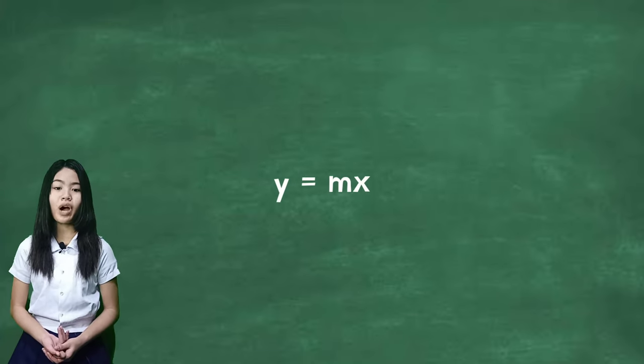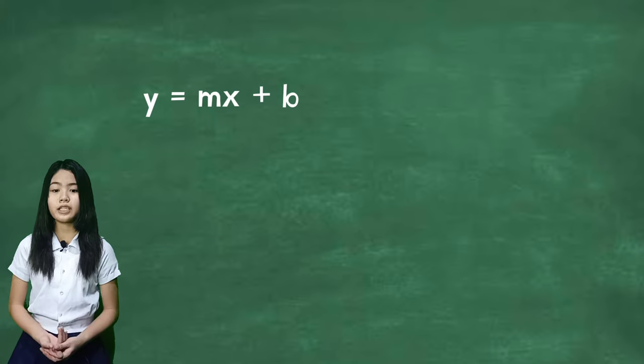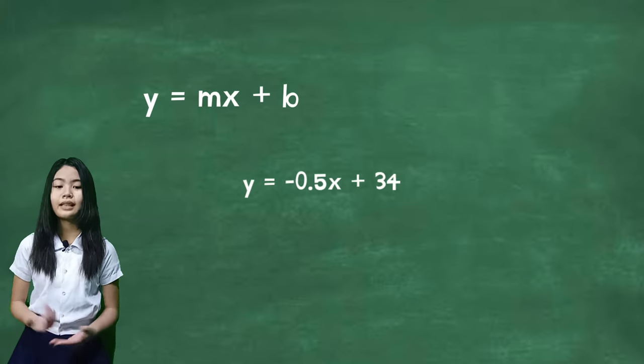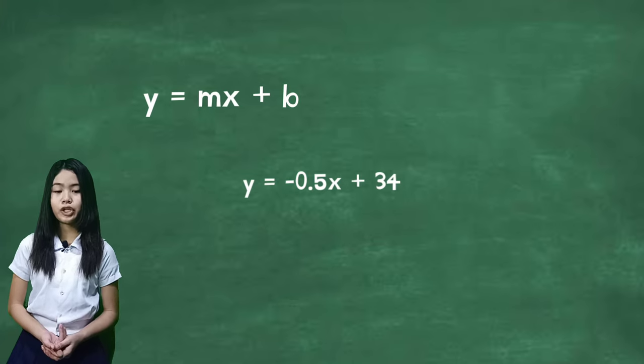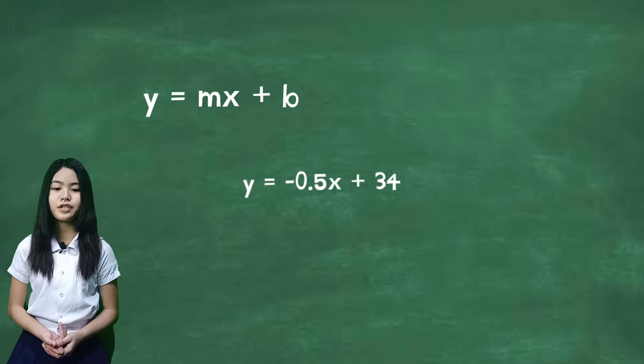Next, let's identify the equation in the form of y = mx + b. Let m be -0.5 feet per day, and let the y-intercept be 34 feet, leaving us with the final equation of y = -0.5x + 34.